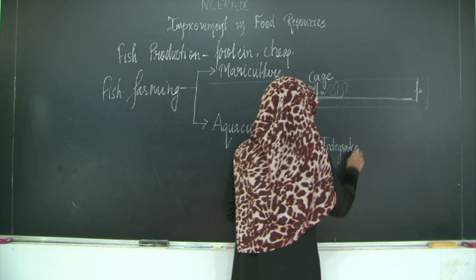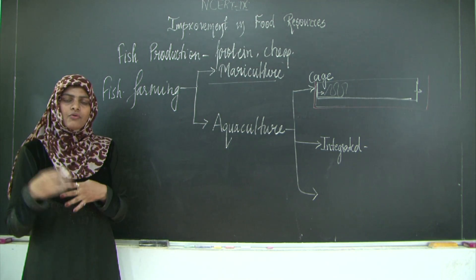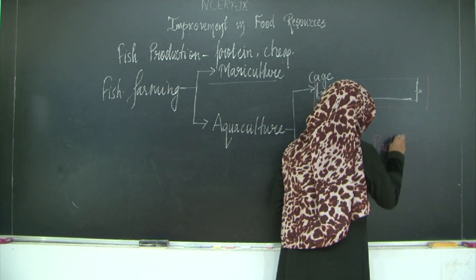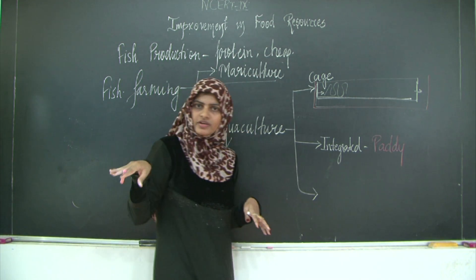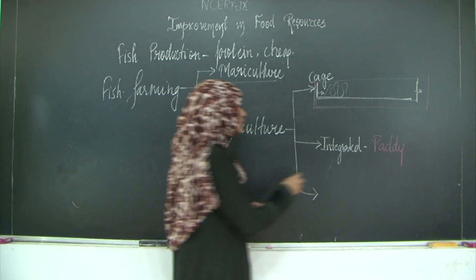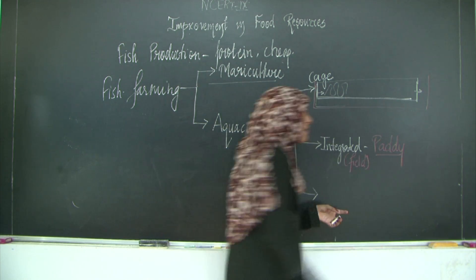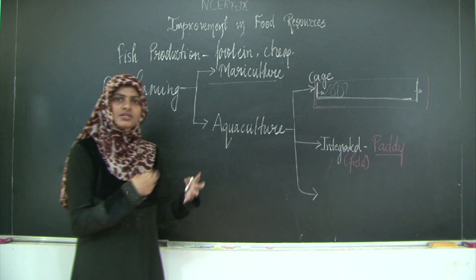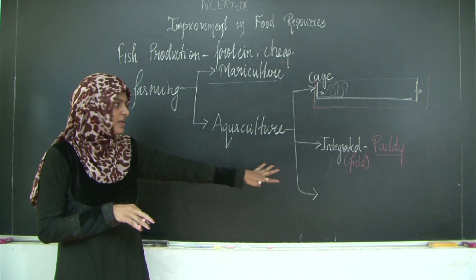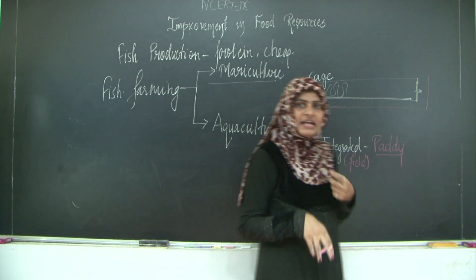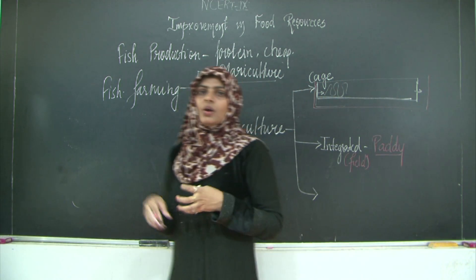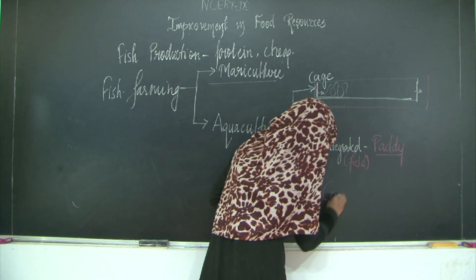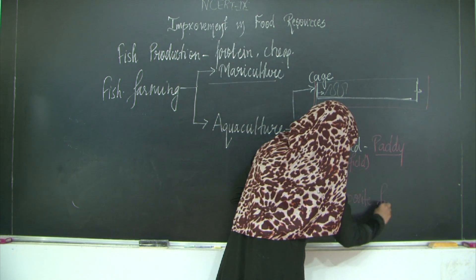The second type is integrated aquaculture, where culture fishing is integrated with food production - specifically plant cultivation. This is generally done with paddy production, since paddy is cultivated in the rainy season and there is a lot of water in the field. Seeds or eggs are added to the field, so you do two things simultaneously: farming the plant paddy, while the fishes grow on the weeds and fertilizers present in the field.